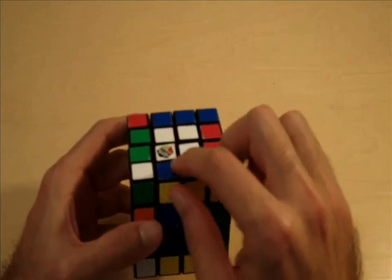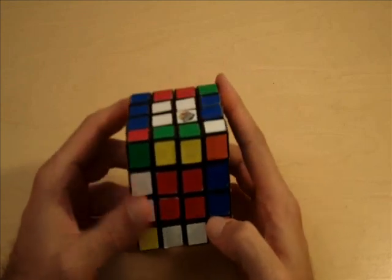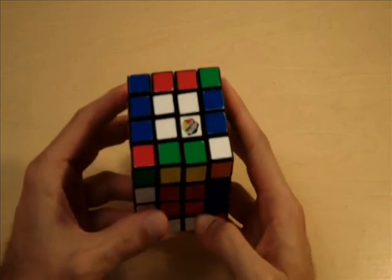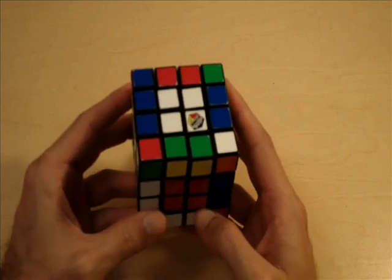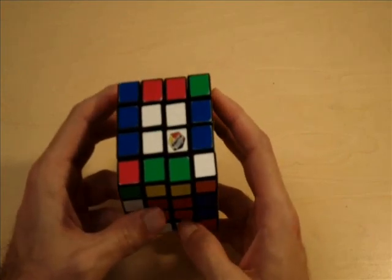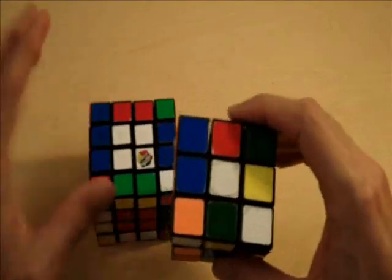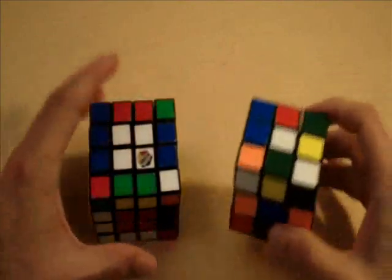Notice how these blue and yellow edge pieces are matched. Every single edge piece should be matched, and essentially what we have done so far is we have turned this 4x4 Rubik's Cube into a 3x3 Rubik's Cube. You can treat this white center exactly the same as this white center in the 3x3.